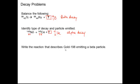Alright. Write the reaction that describes gold-198 emitting a beta particle. Beta being 0 or negative 1 beta. So AU-198 and it's number 79 on the periodic table emitting a beta.